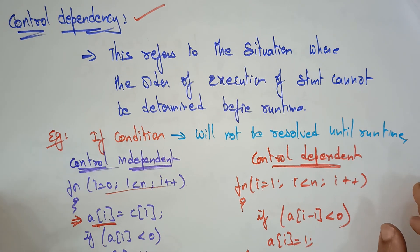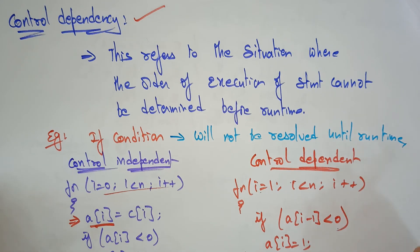This is about control dependency. In the next video, we will see the other type of conditions of parallelism, that is resource dependency. Thank you.